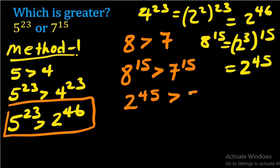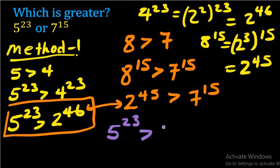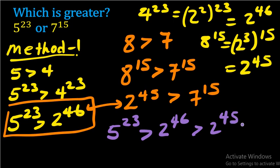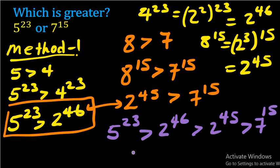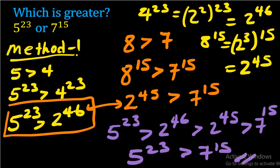Therefore two to the power of 45 is greater than seven to the power of 15. As you can observe, two to the power of 46 is greater than two to the power of 45. So connecting it all: five to the power of 23 is greater than two to the power of 46, which is greater than two to the power of 45, which is again greater than seven to the power of 15. By transitivity, our conclusion is that five to the power of 23 is greater than seven to the power of 15. That is the first method.